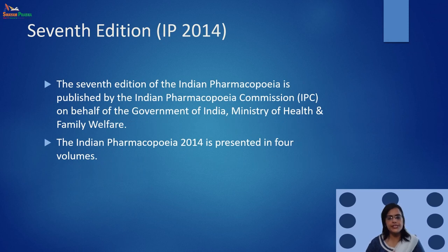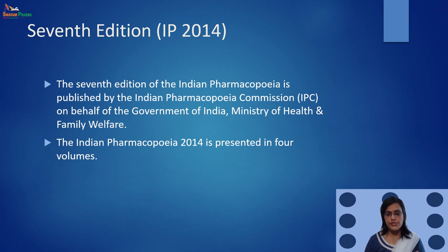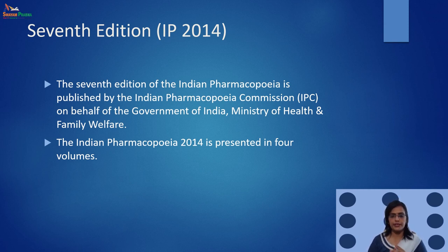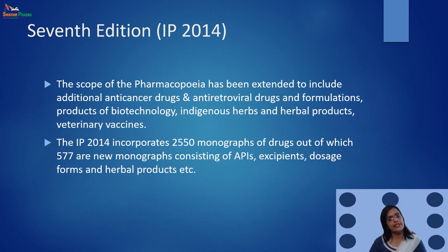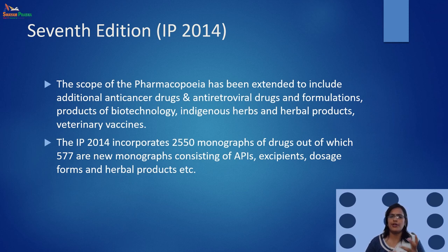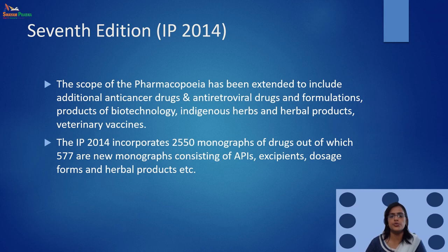The 7th edition of Indian pharmacopoeia was published by the Pharmacopoeia Commission on behalf of the Government of India, Ministry of Health and Family Welfare, in 2014. It was presented in 4 volumes. The 7th edition incorporates 2550 monographs of drugs, out of which 577 are new monographs consisting of APIs, excipients, dosage forms, and herbal products.